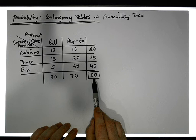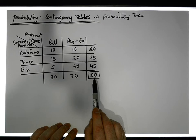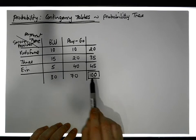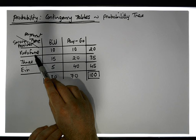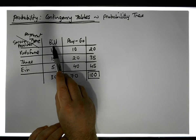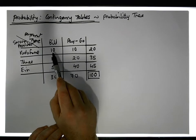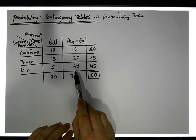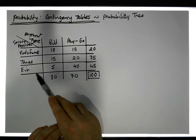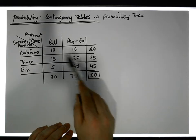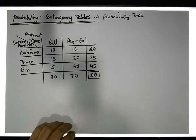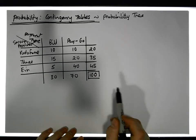You can see the results from the 100 students. For example, 10 students said they were with Vodafone and paid monthly by bill, and 40 students said they were with Eir and on a pay as you go scheme, and so on.